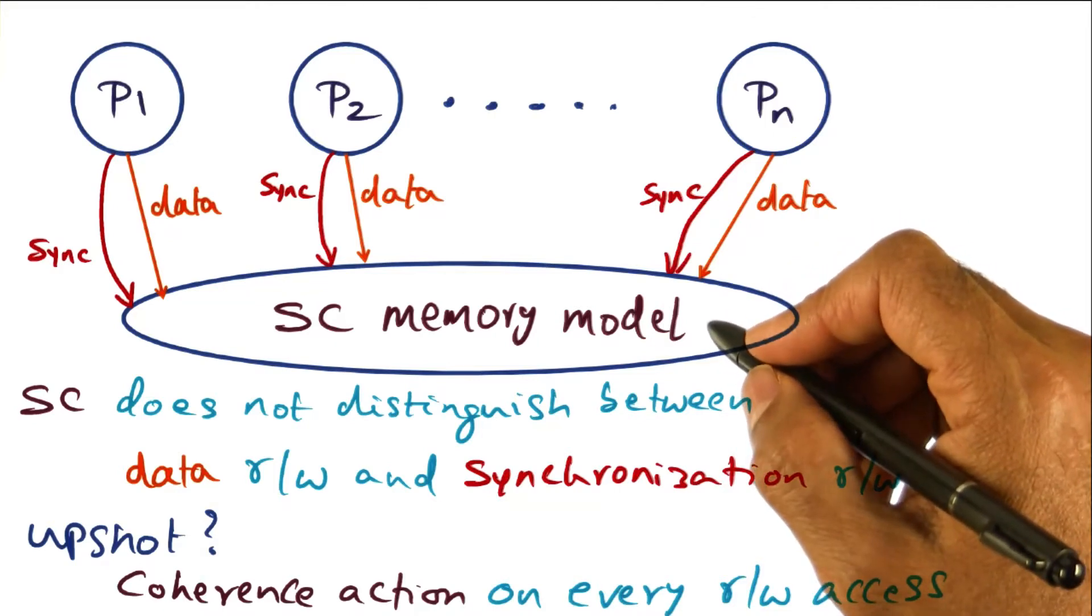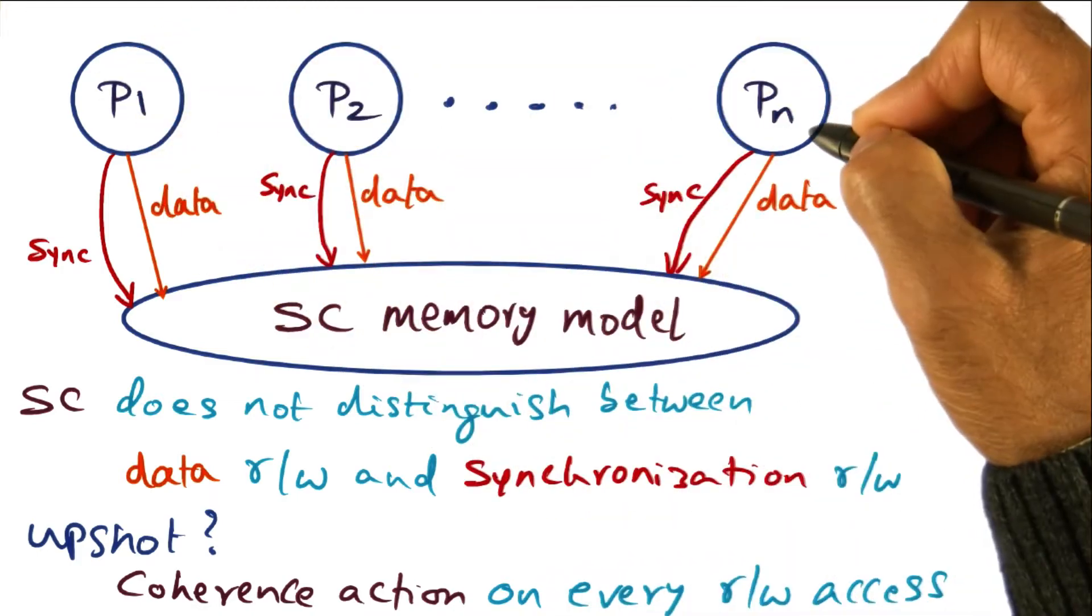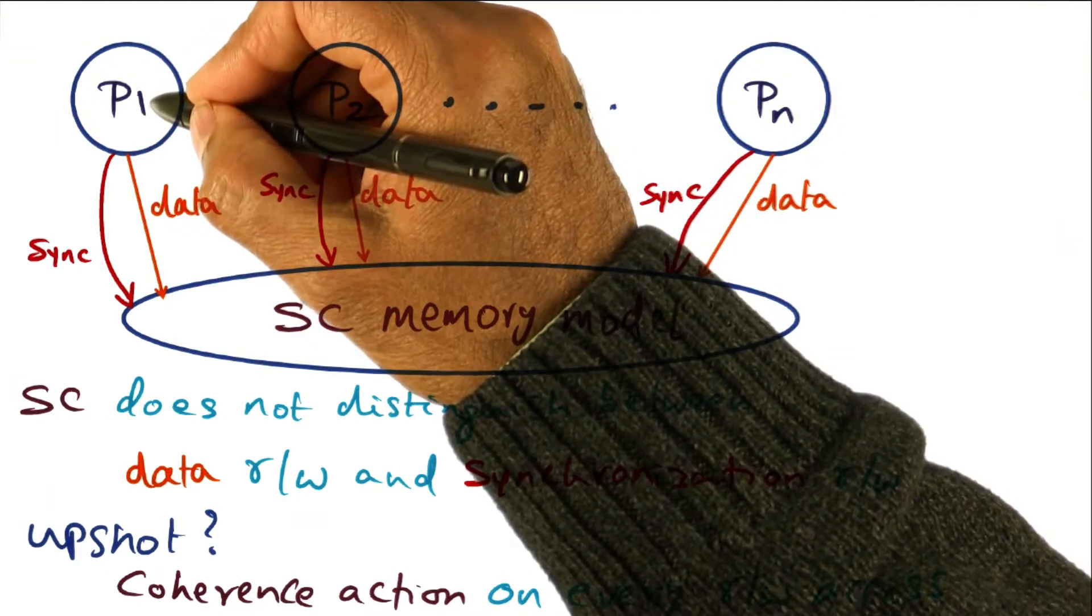With the sequentially consistent memory model, let's come back to a parallel program. So a parallel program is making read-write accesses to shared memory.